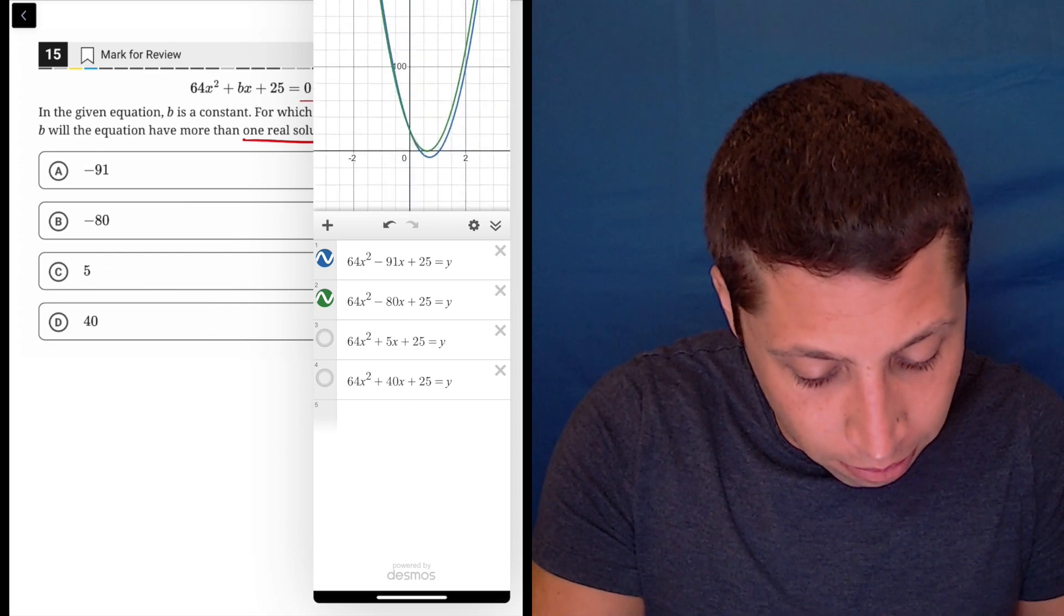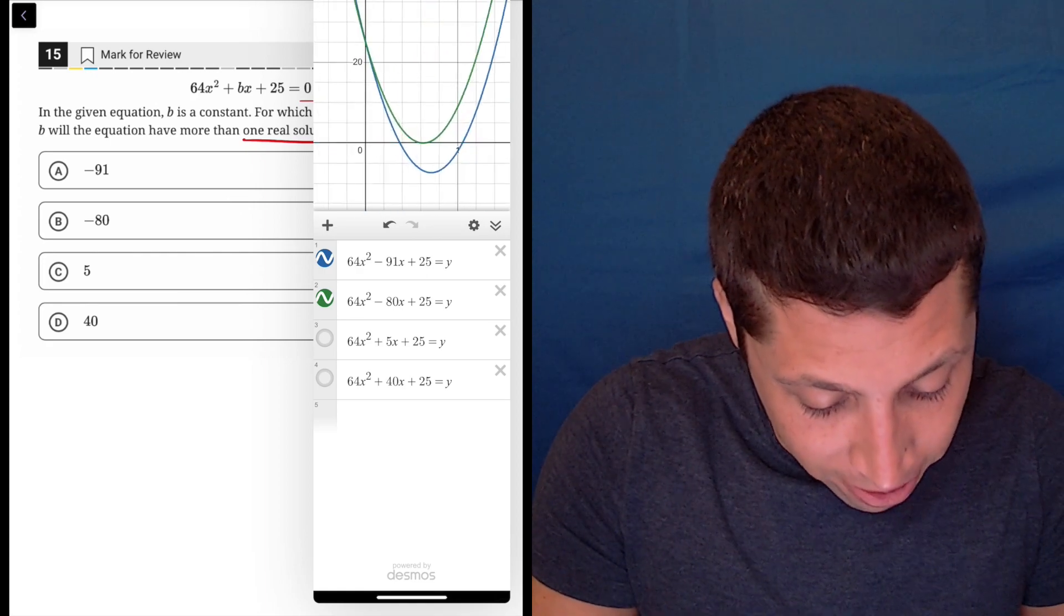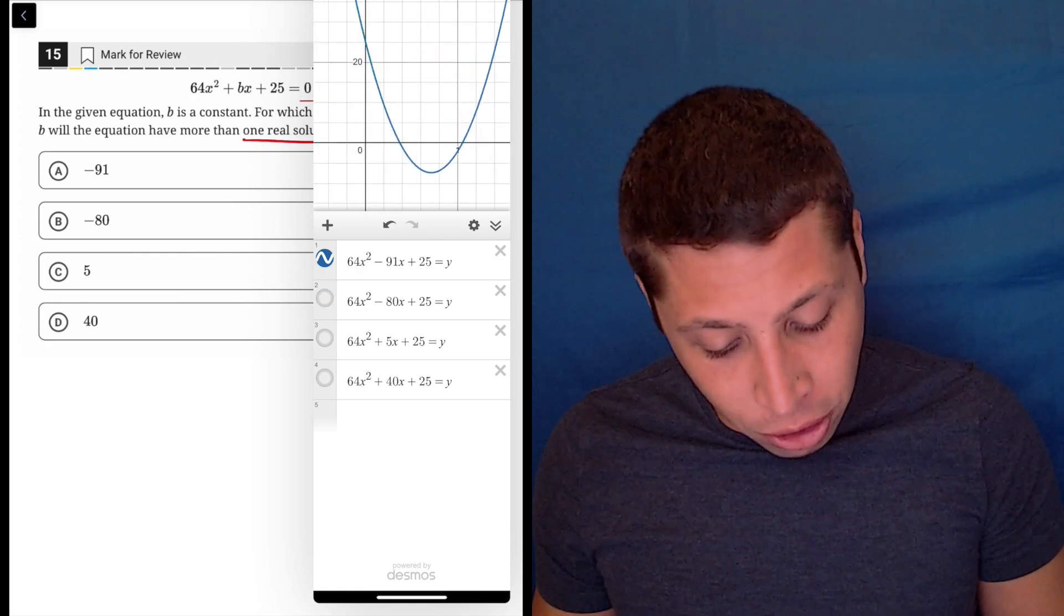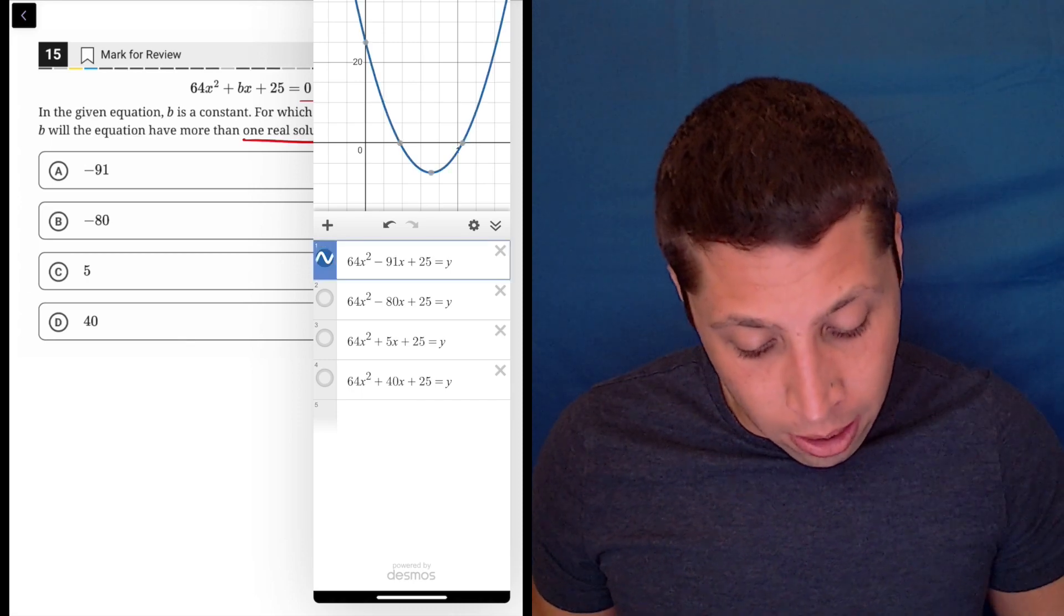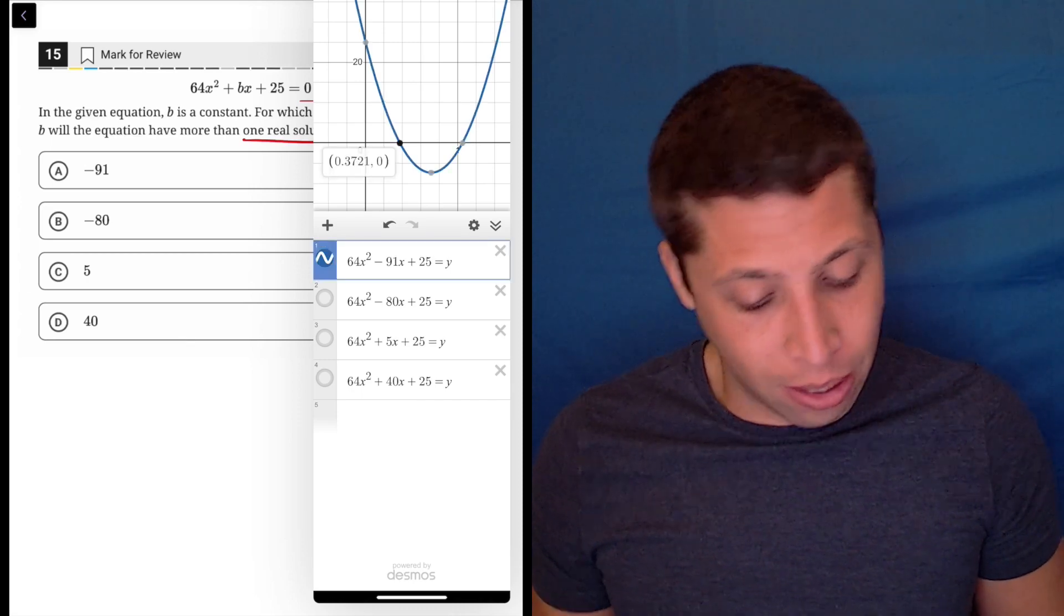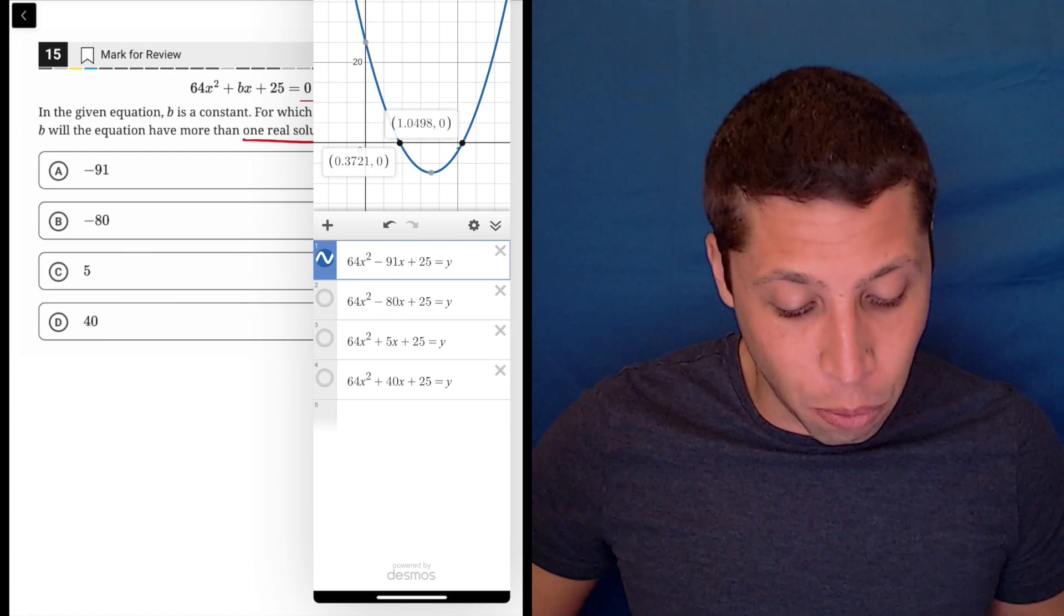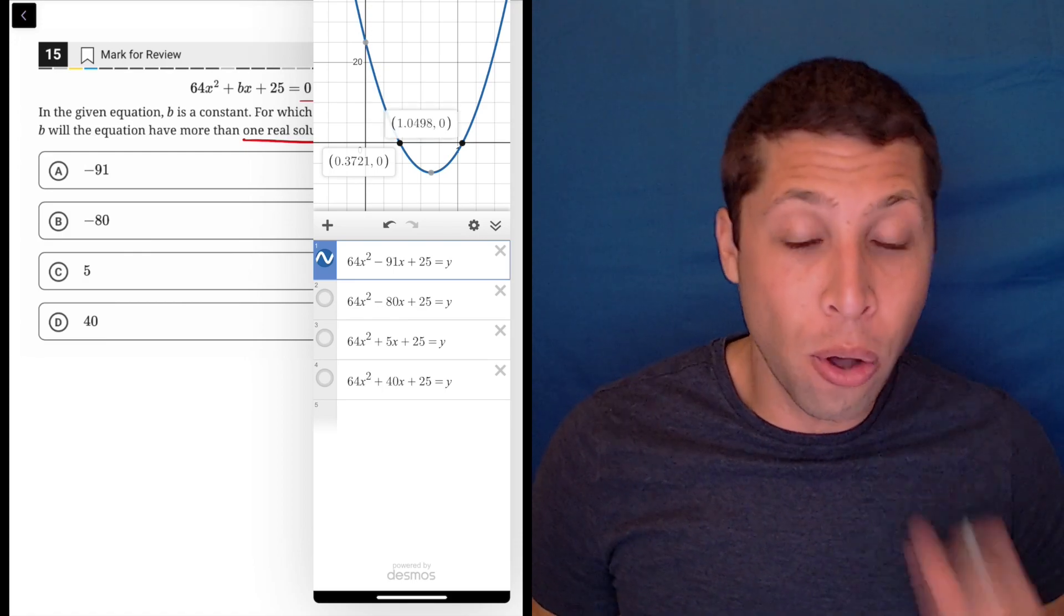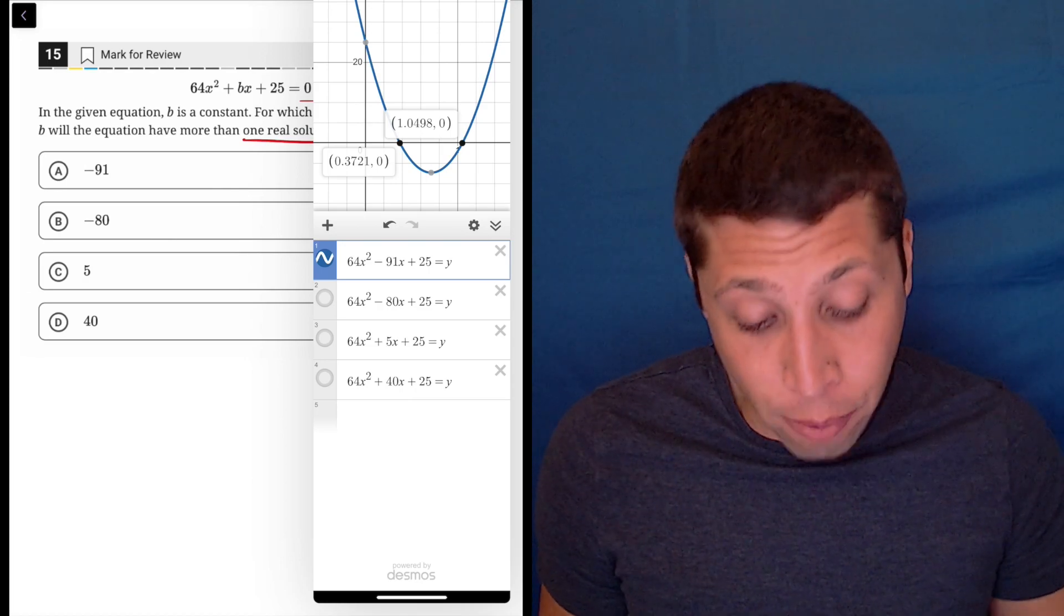We can zoom, maybe it's going beyond it. It's hard to tell, but yes, it's only hitting it in one spot. This is why I hate this new Desmos thing, it's too hard to use sometimes. There we go. So the green is just touching it once. It's the blue that has more than one solution. It has one here at 0.3721 and here at 1.0498. So those are the two x-intercepts of this graph. And so there you go, A would be our answer.